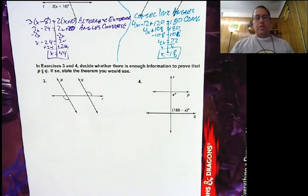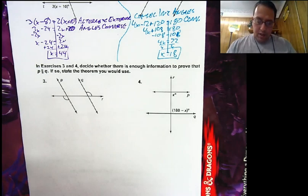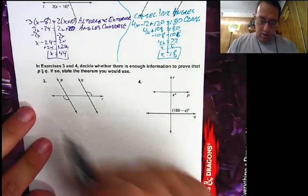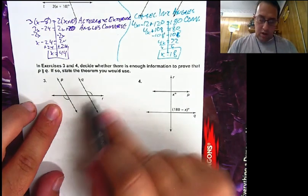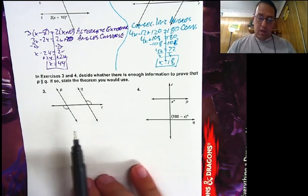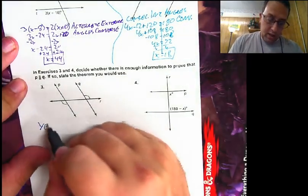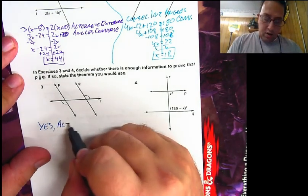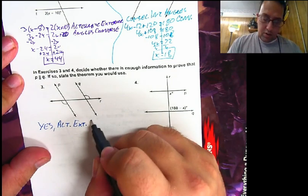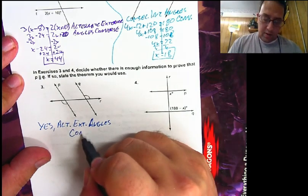Now we need to decide: is there enough information to prove that line P is parallel to line Q? For number 3, we have two angles marked. These two angles are on alternate sides of the transversal and outside of our two lines, so they are alternate exterior angles. They are marked as congruent, and since alternate exterior angles are congruent, the lines are parallel. Yes, we have enough information — this is the alternate exterior angles converse.